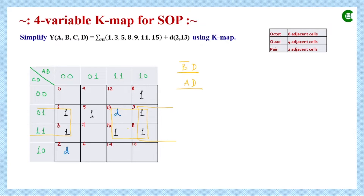We check for another quad. There is still a single 1 not part of any group. Taking four adjacent cells forms a new quad. Evaluating: between these two cells A changes (eliminated) and B changes (eliminated); across all four cells C is 0 so it becomes C', and D is 1 so it stays D. The simplified term for this quad is C'D.